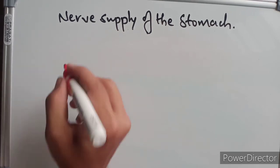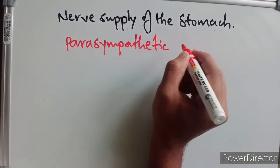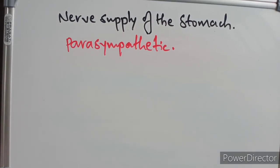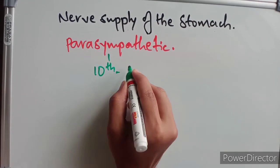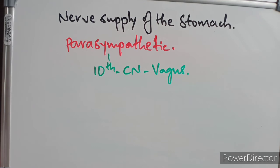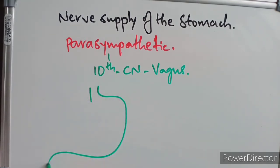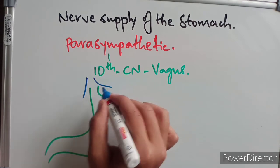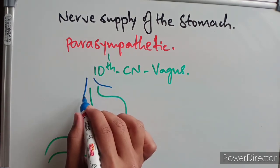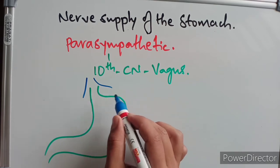The parasympathetic innervation is mainly from the tenth cranial nerve, the vagus nerve. Both the right and left vagus nerves supply the stomach. The anterior vagal trunk, mainly from the left vagus nerve and partly from the right, and the posterior vagal trunk, mainly from the right vagus nerve and partly from the left, supply the anterior and posterior parts of the stomach respectively.